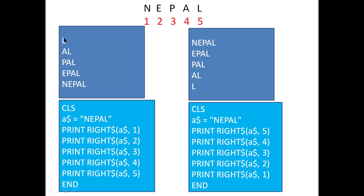First, if you want to print L from 'NEPAL', write: a$ = "NEPAL". Now I want to print only L, which is available at the right side. So I write: Print Right$(a$, 1) — from the string a$ only one character from the right-hand side, which is L, so L will be printed. Next time I want AL — from the right-hand side two characters, first L and second A.